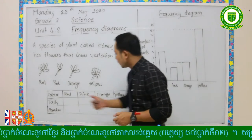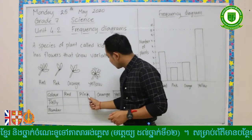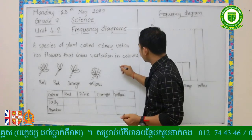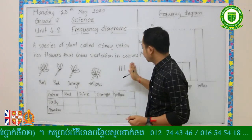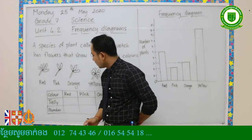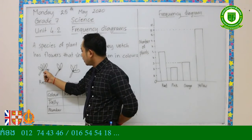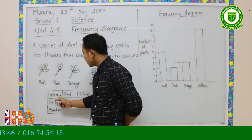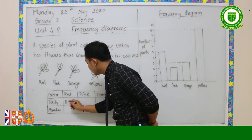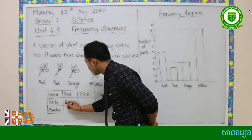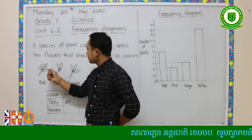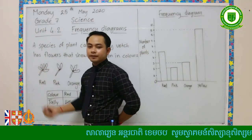In the frequency diagram table we have the colors: red, pink, orange, and yellow. We will write the tally — just draw lines to count the numbers. Now let's count together. For the color red, count how many: one, two, three, four, five — so red color has five. We draw four lines and then one across for five.